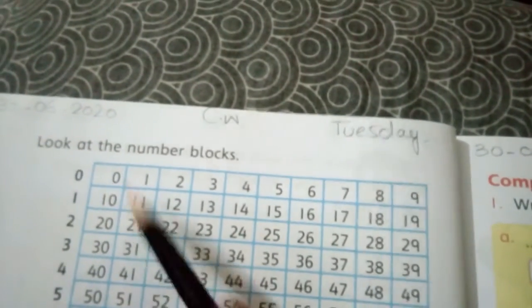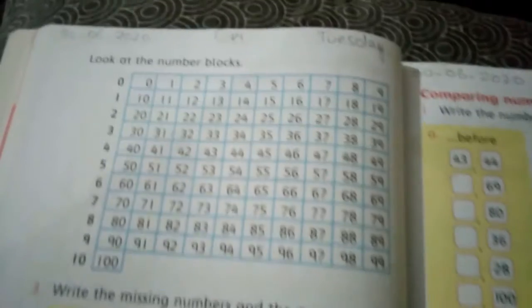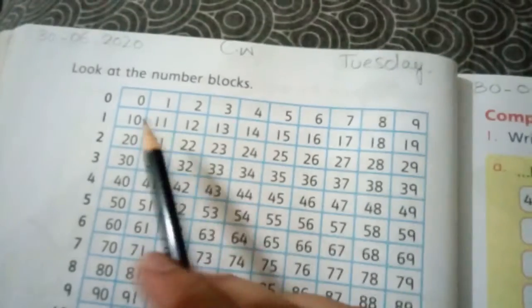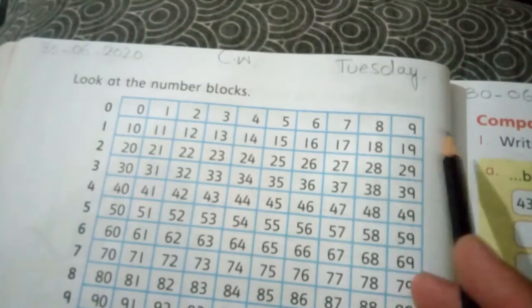Look at the number blocks. These are the number blocks. I tell you how counting works. It starts from 0, so like this. Now I will be counting like this: 0, 1, 2, 3, 4, 5, 6, 7, 8, 9.